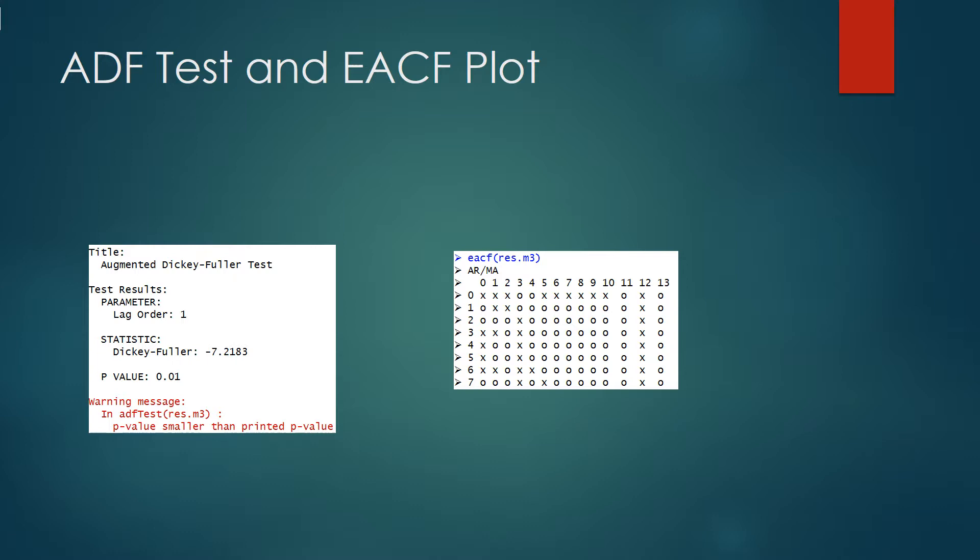Turning to the EACF plot, if we disregard the column of crosses in MA12, the apex of the EACF plot is probably ARMA(1,3), or possibly (0,3). If we also ignore the crosses in moving average 3, then ARMA(2,1) may also be promising.